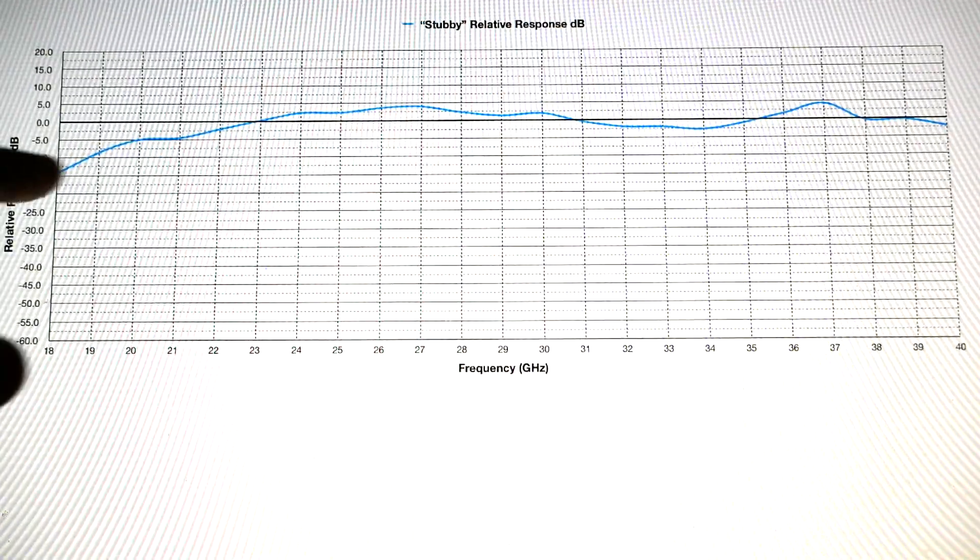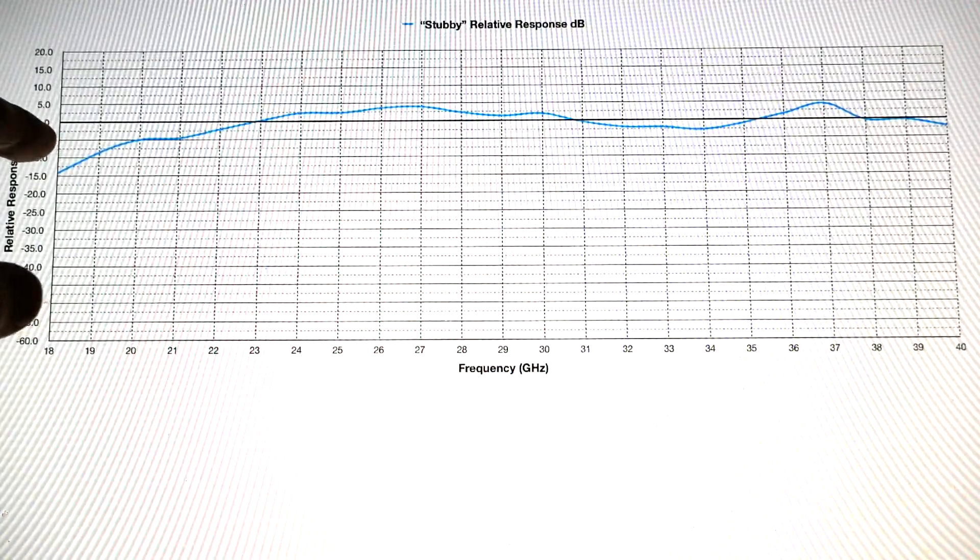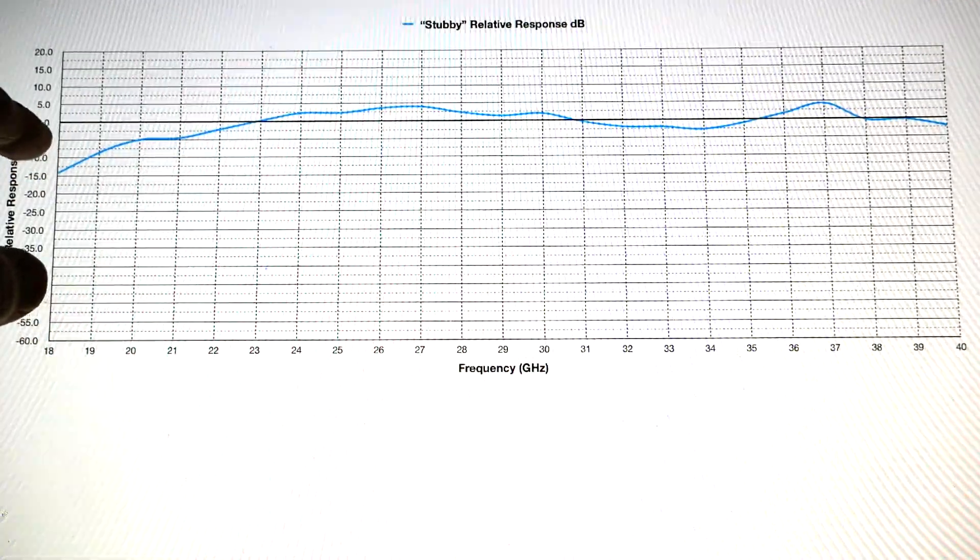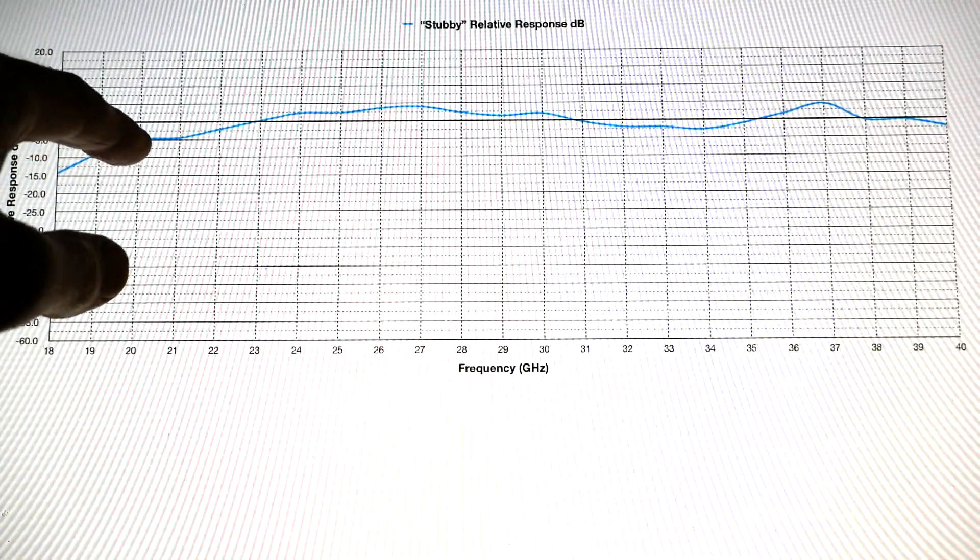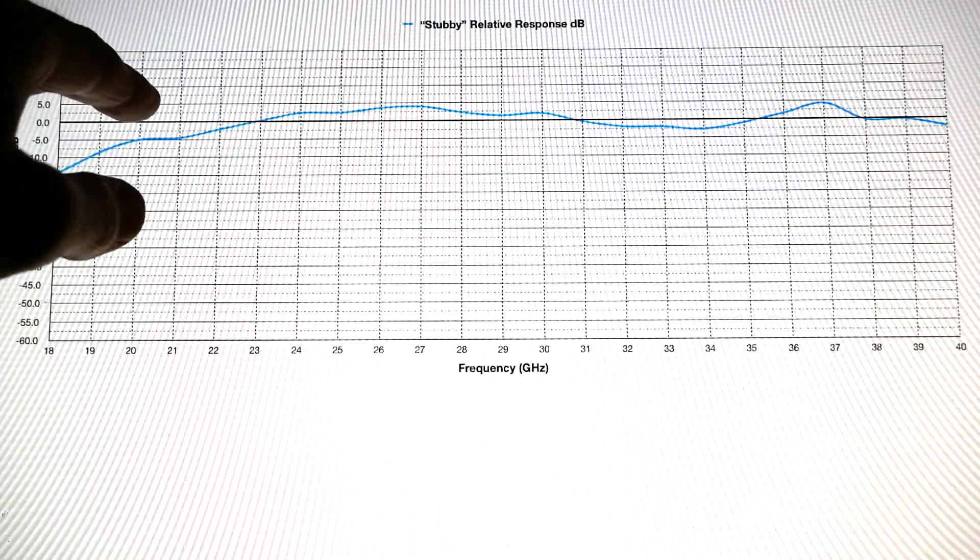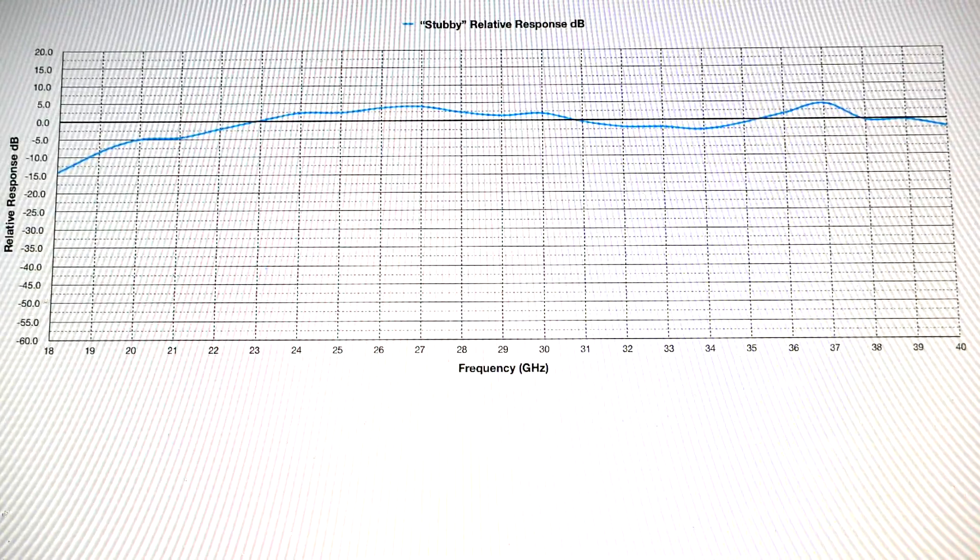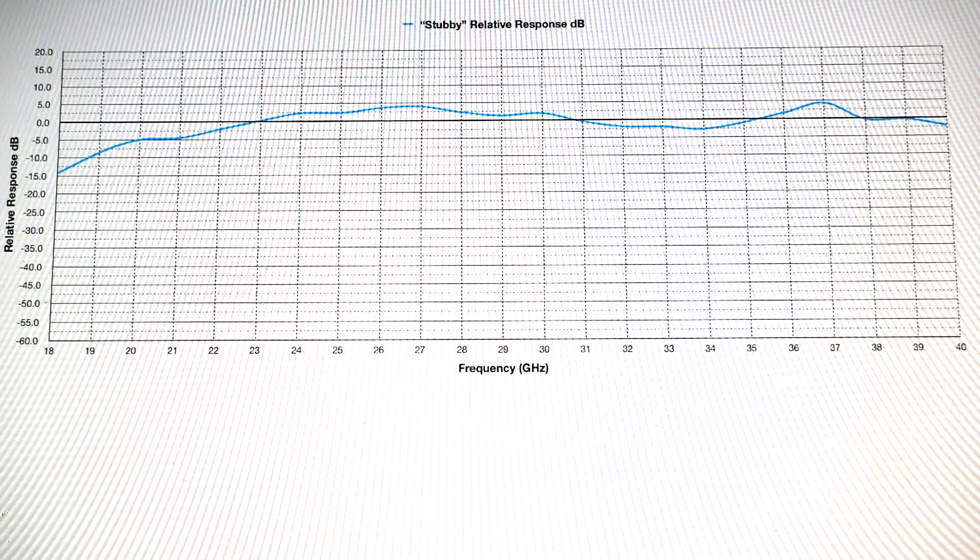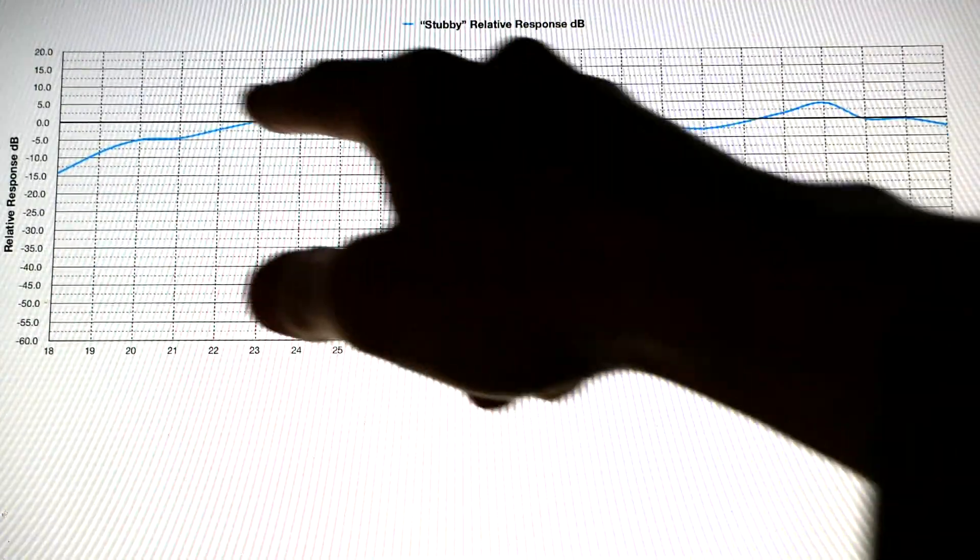So we can see that this first line here, this is minus 5, and we got zero, and then up there is plus 5 dB. And so if we look at this curve, we're going from 20 gigahertz to 40 gigahertz.